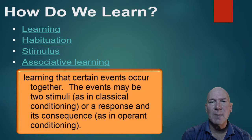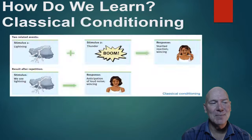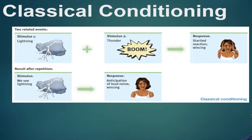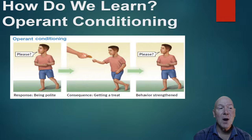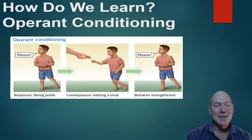Associative learning is when we start to associate events that happen one after the other. This includes classical conditioning and operant conditioning — we'll look at cognitive and observational learning in a future video. Classical conditioning involves responses we naturally have; for example, when we see lightning we expect thunder and we wince. Operant conditioning is different — it's when we operate on our environment and the result dictates whether we'll do that behavior again.